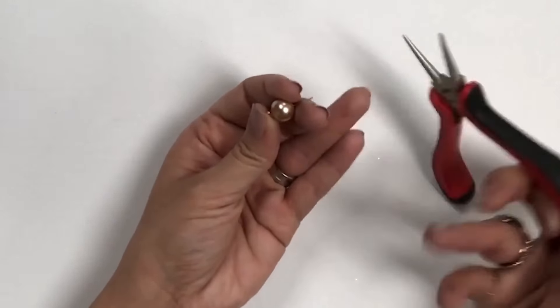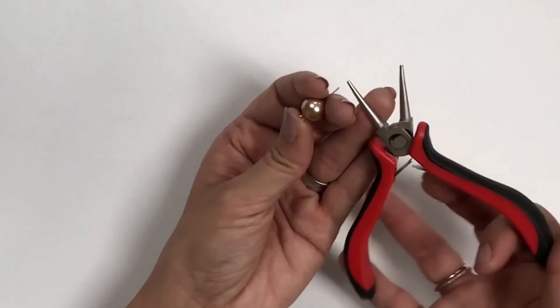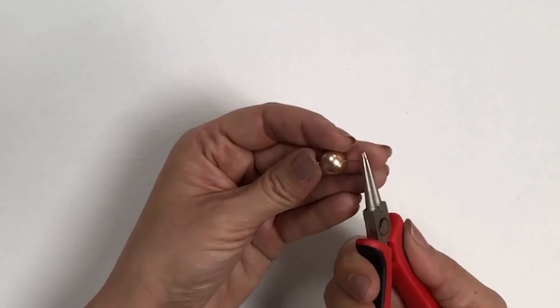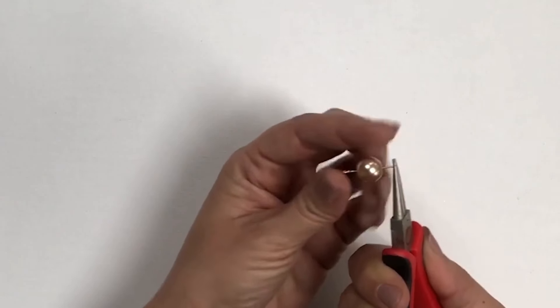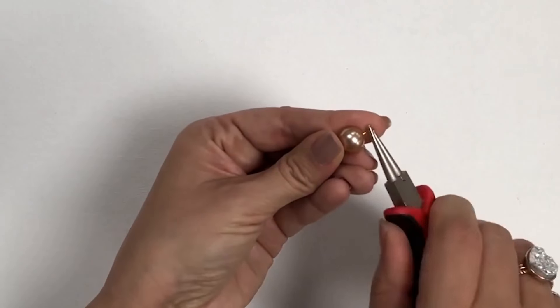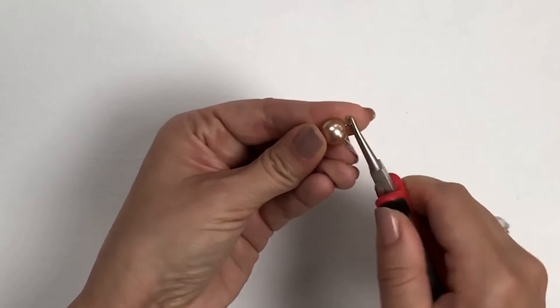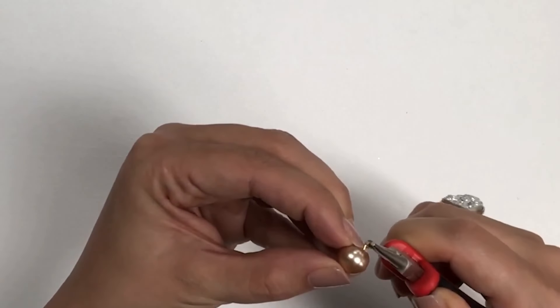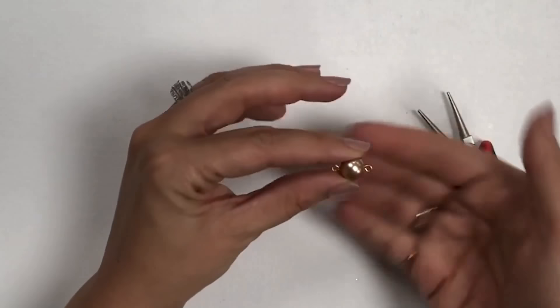I'm going to take what are called the round nose pliers. I want to grab hold of the end of the wire with my pliers and you just twist your wrist like this to make that loop.